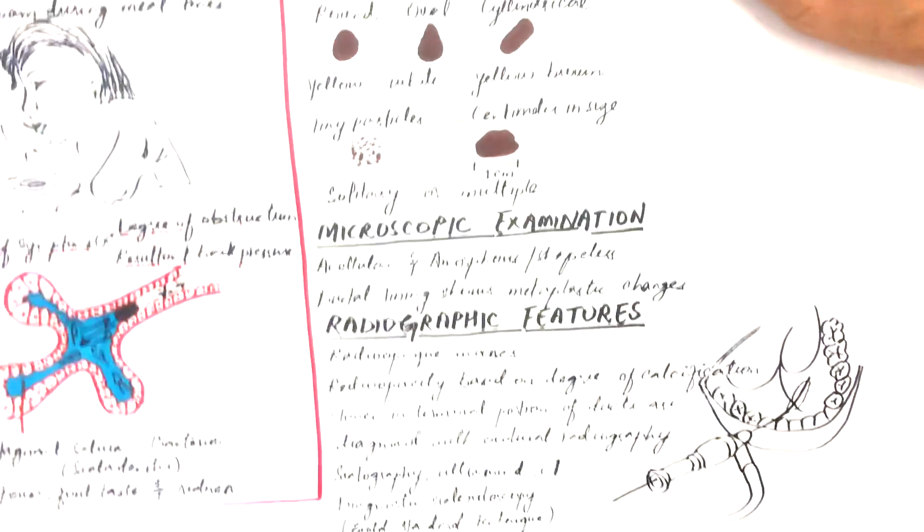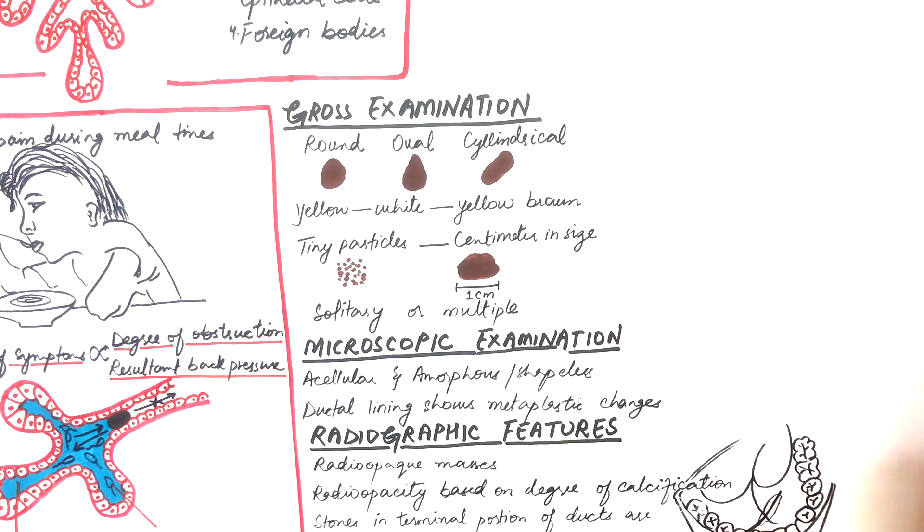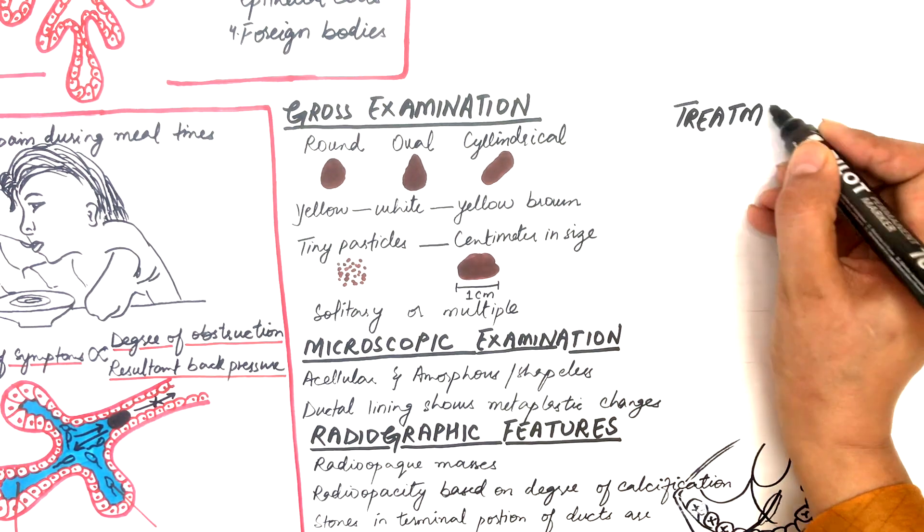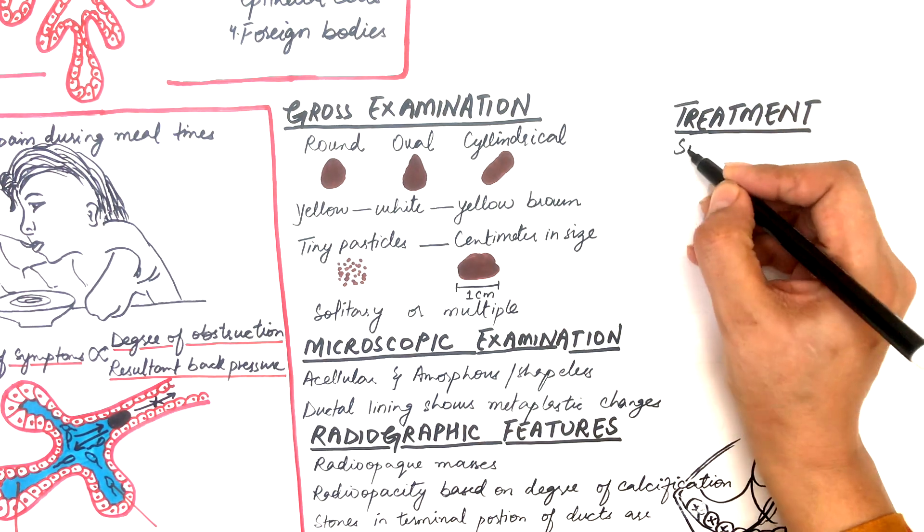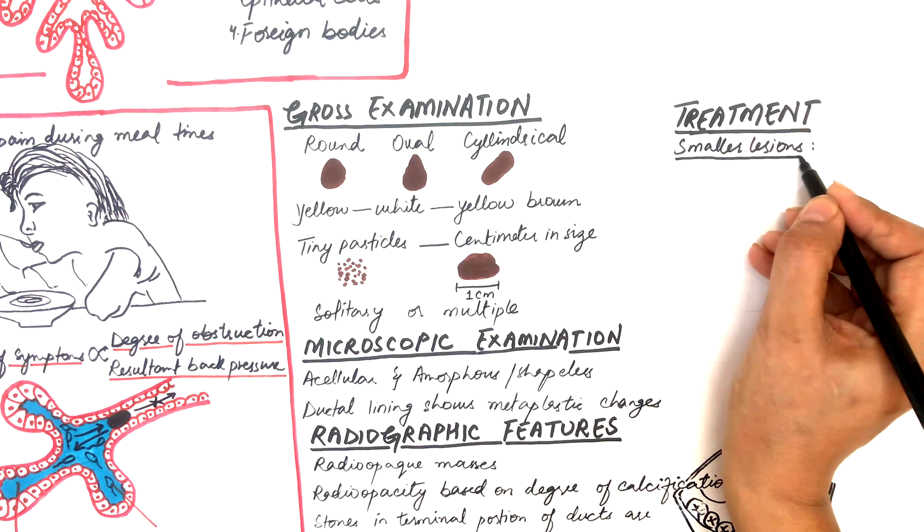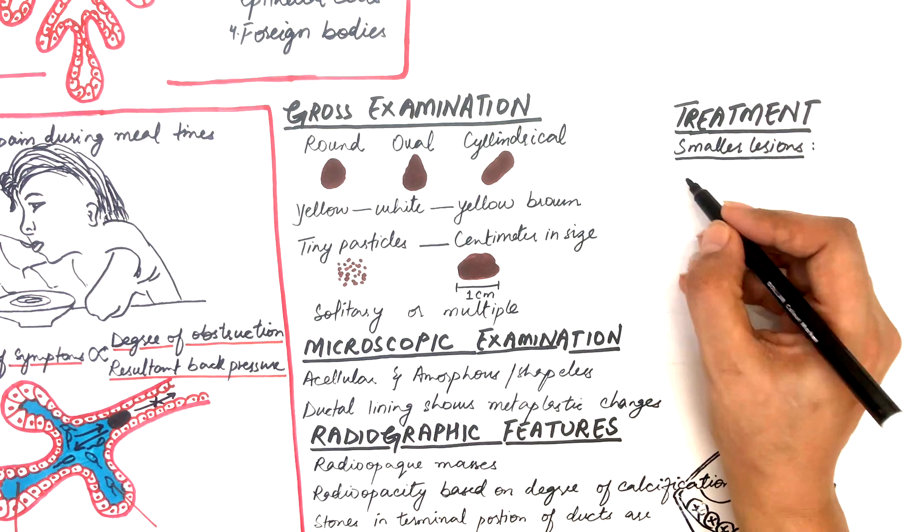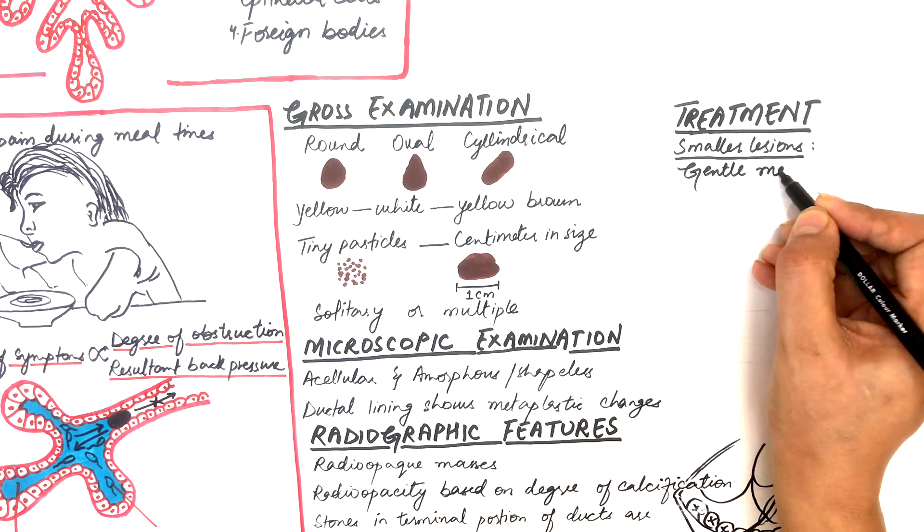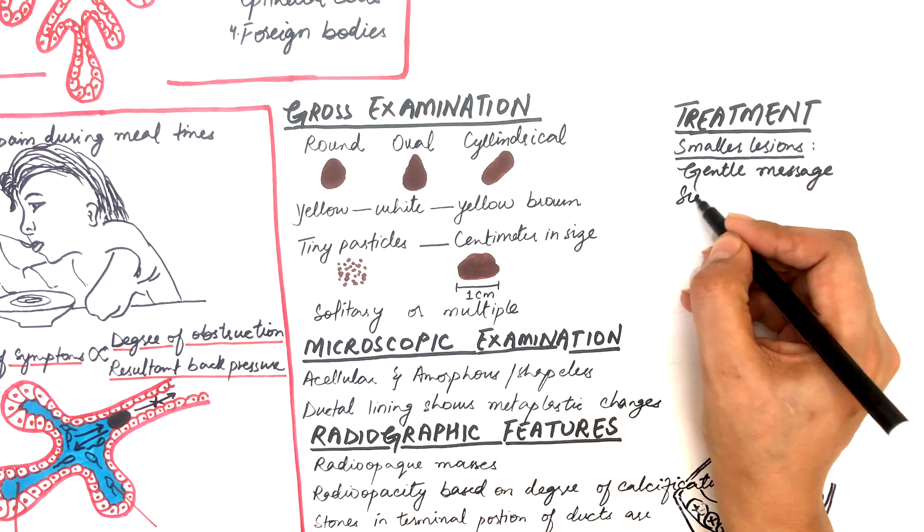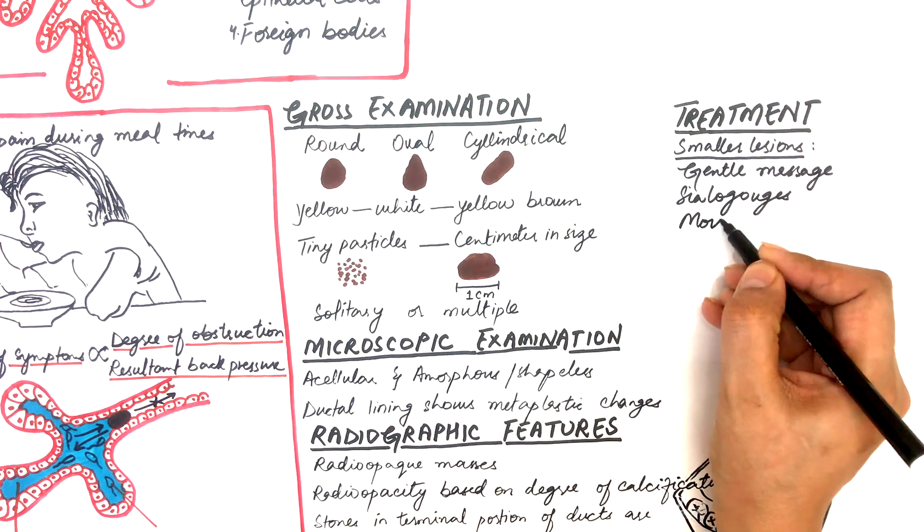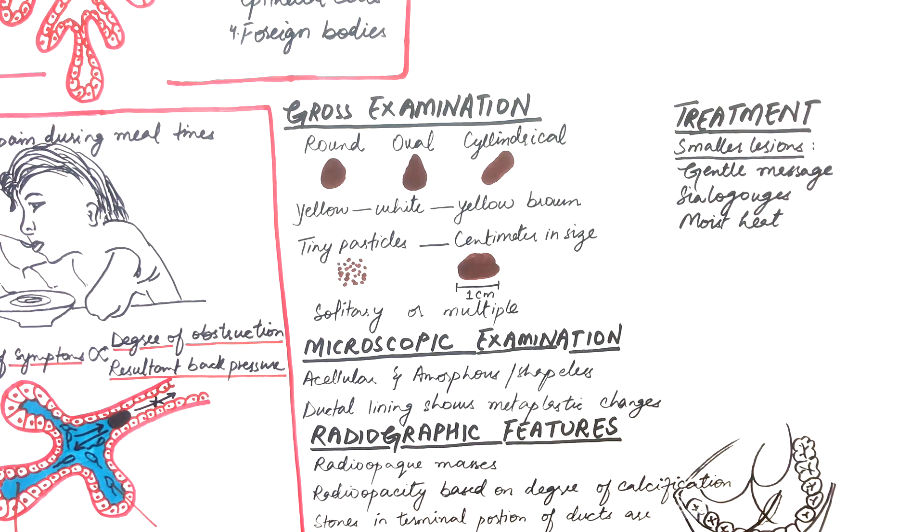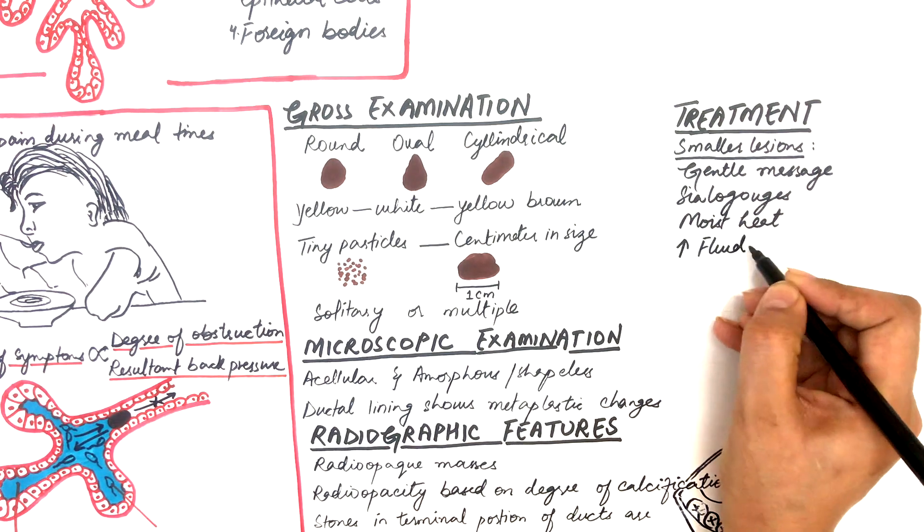Coming to the treatment now, the treatment options are based on the size of a sialolith. Small sialoliths can be treated in a conservative way, such as gentle massage of the gland in an effort to milk the stone towards the ductal orifice. Drugs that induce saliva, called sialogues, can also be used. Moist heat and an increase in fluid intake may also promote passage of the stone.